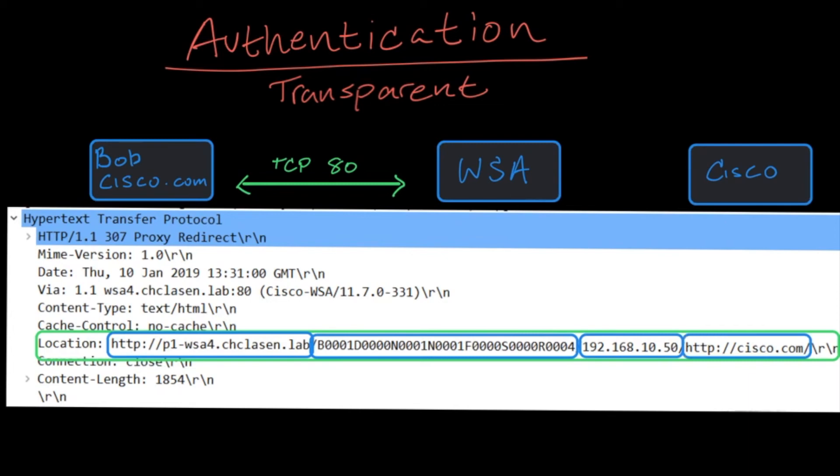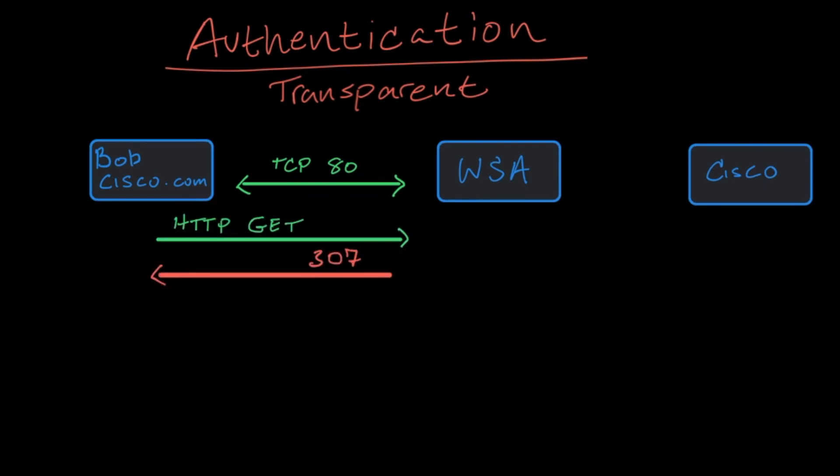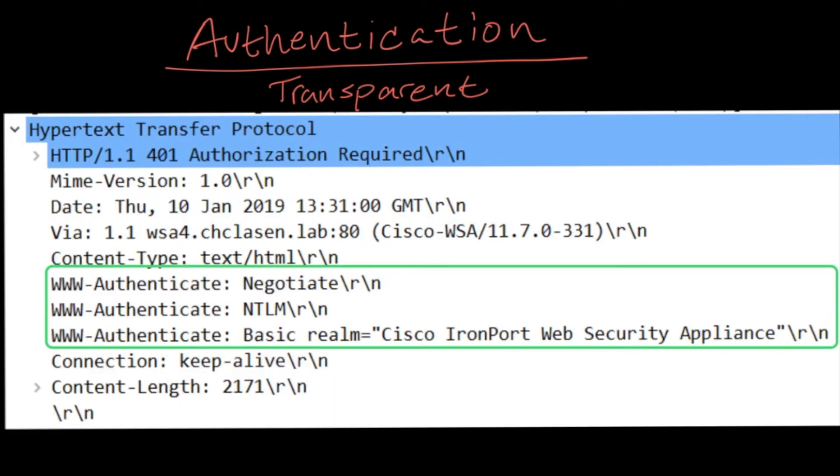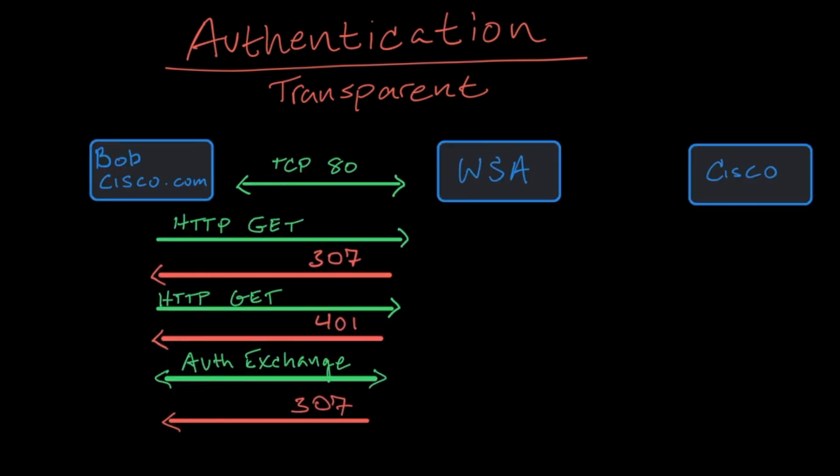When Bob's computer follows this redirect, the same process plays out as did in the explicit scenario. The web security appliance responds with a 401 that offers the available authentication mechanisms as the authenticate headers, and Bob's machine chooses which one it wants to use. Once the authentication is complete, the WSA redirects Bob back to the original resource, in this case Cisco.com.